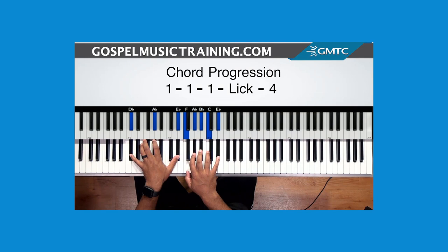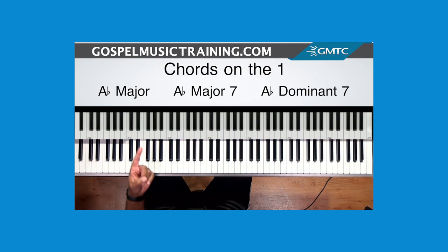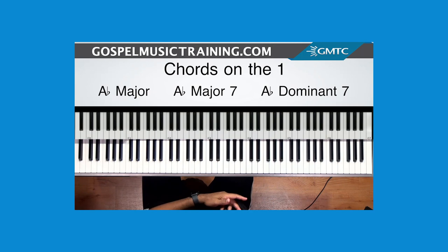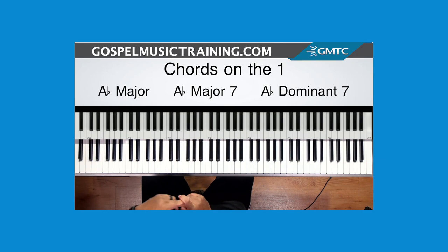The basic idea of what's happening on the one: we start off with an A flat major chord, then switch to an A flat major seven chord, and then switch to an A flat dominant seven chord. So we're taking this one chord and moving through different chord qualities — from major to major seven and then to a dominant seven.